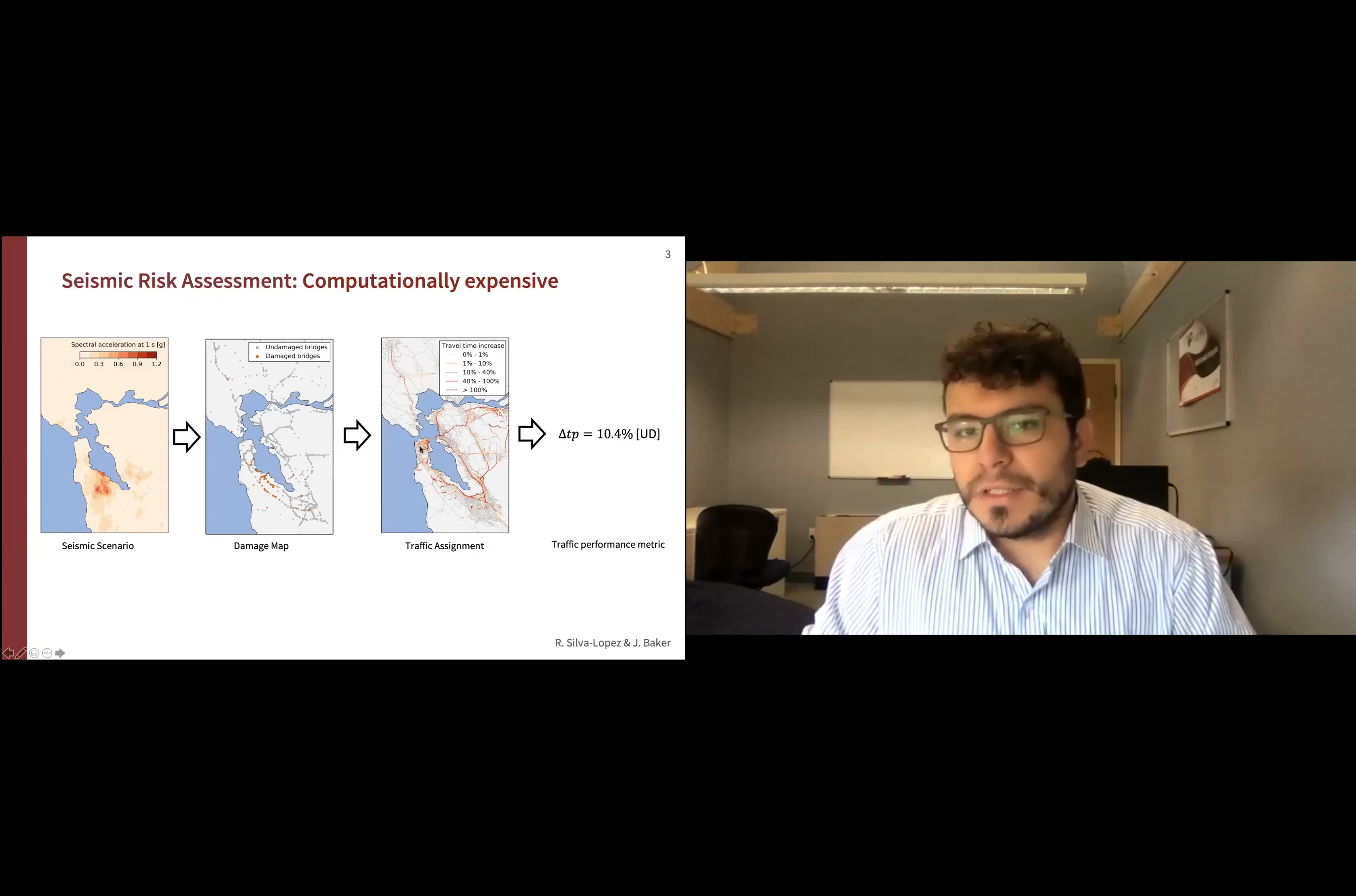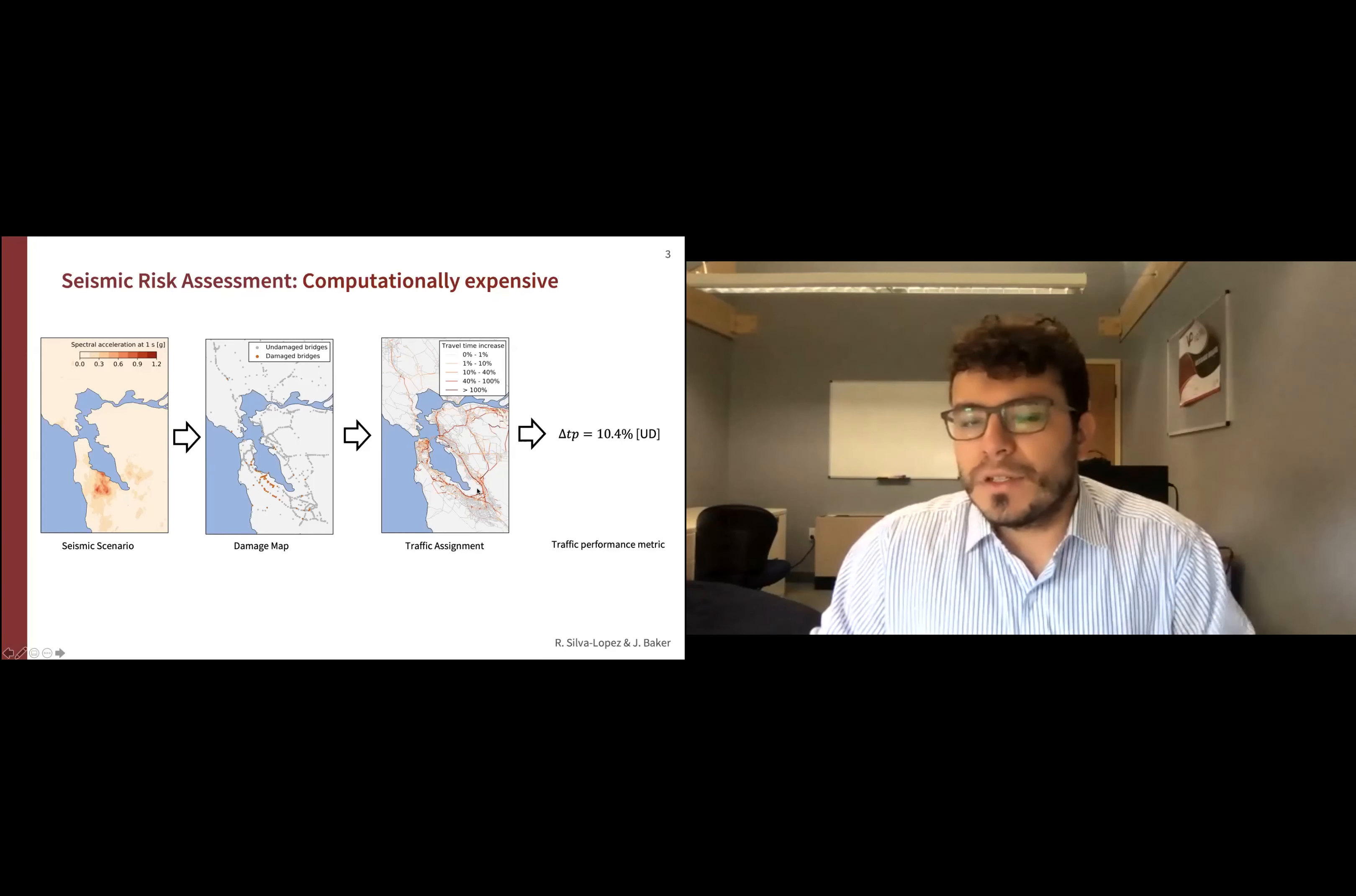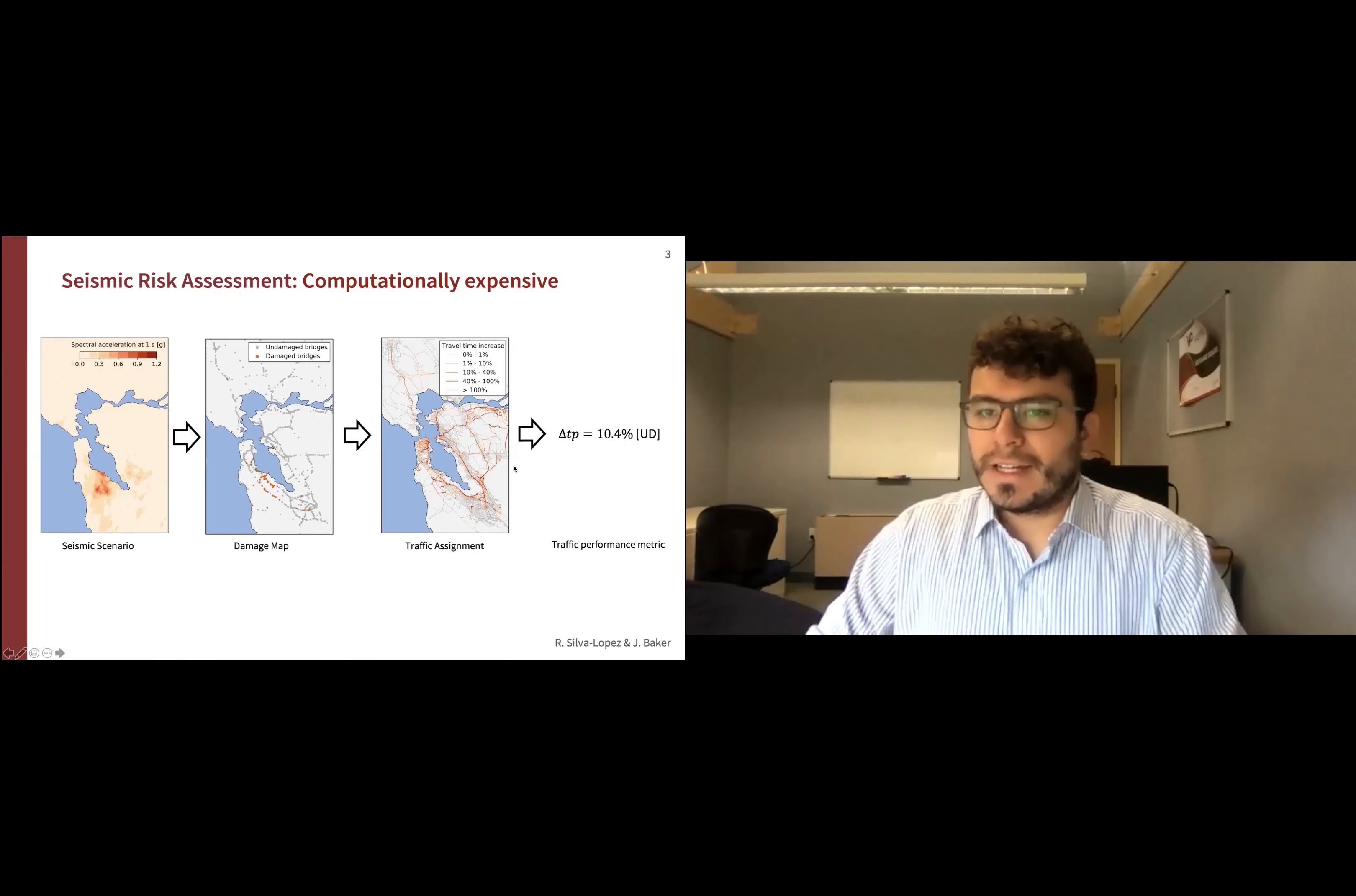We need to do a traffic assignment process in which we model how all individuals in the network move. For instance, we need to know how somebody in San Francisco will go to Berkeley or to South Bay. Given that we're trying to help decision makers decide how to improve this system, it's not enough to just characterize how people move. We actually have to develop metrics that comprise that information in a meaningful manner. We use a traffic performance metric that aggregates both the lost trips due to lack of connectivity and the increase in travel time.